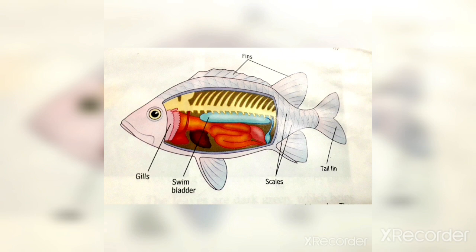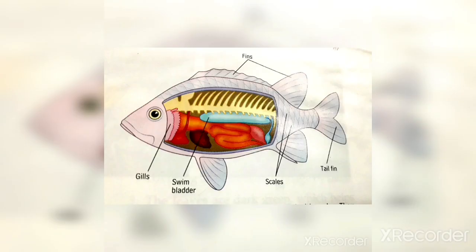Some fish have an air-filled bladder, also called a swim bladder. When a fish wants to rise to a higher level, it fills its swim bladder with air to become lighter — just like a balloon filled with air rises up. When the fish wants to dive down, it releases the air in its swim bladder to become heavier.